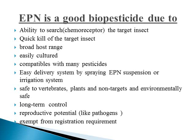Why is EPN considered a good biopesticide? Because of several attributes: the ability to search for and locate the target host insect using chemoreceptors; quick killing action of the target pest; a broad host range; ease of mass production in the laboratory; and high compatibility with many pesticides, which can be applied through conventional plant protection equipment. It has an easy delivery system by spraying EPN suspension or through an irrigation system. It is very safe for all vertebrates, animals, plants, and non-target insects, and is also environmentally safe, causing no pollution.